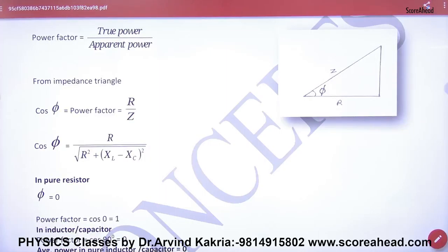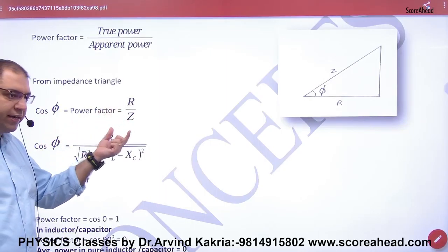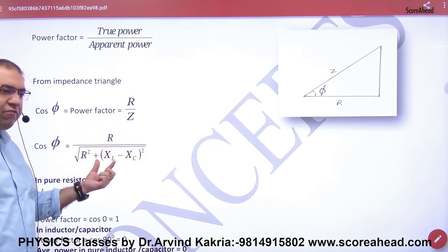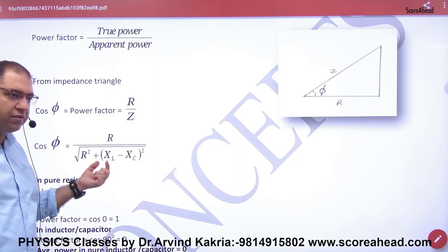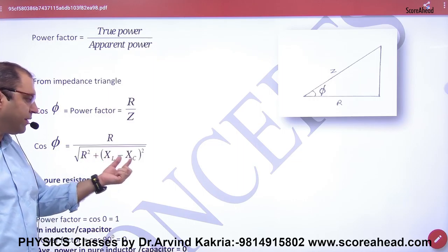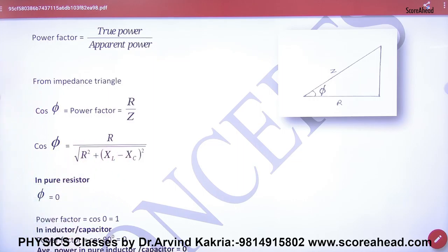So what is the power factor? Cos phi = R/Z, and Z formula is under root of R square plus (XL minus XC) whole square.